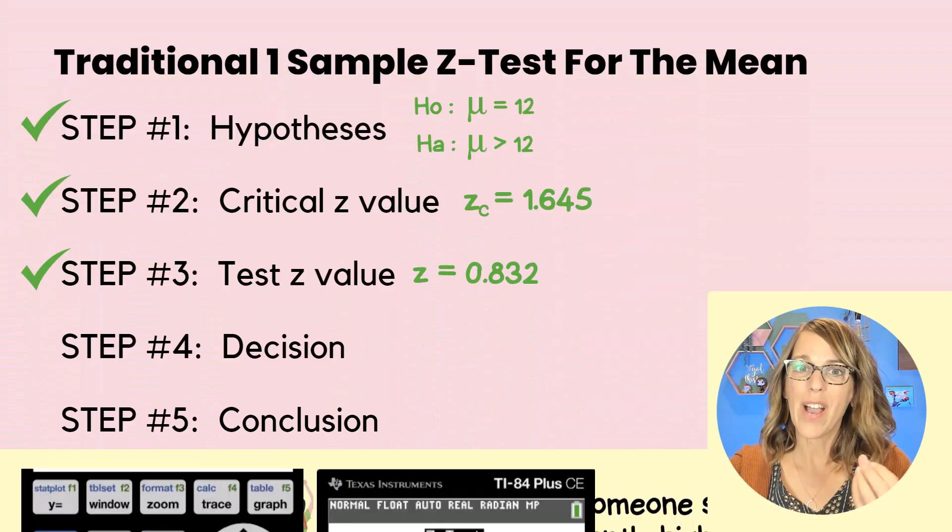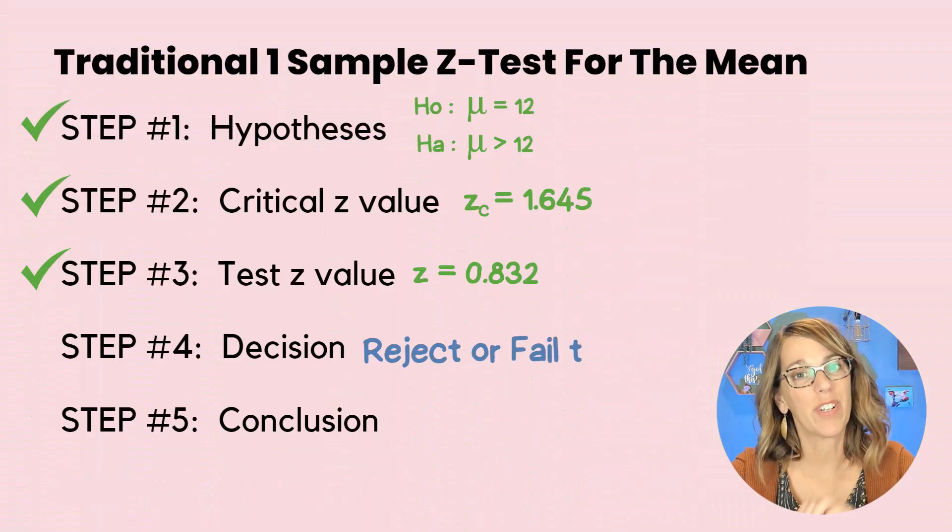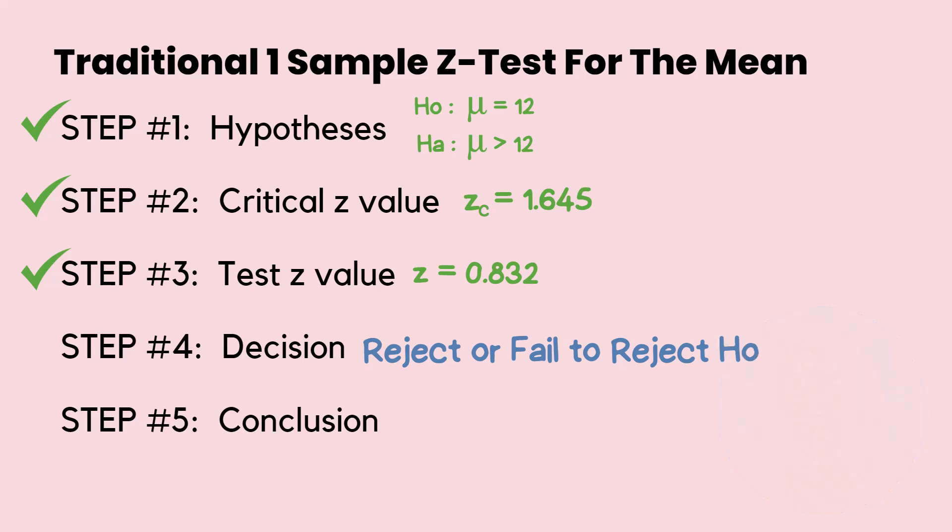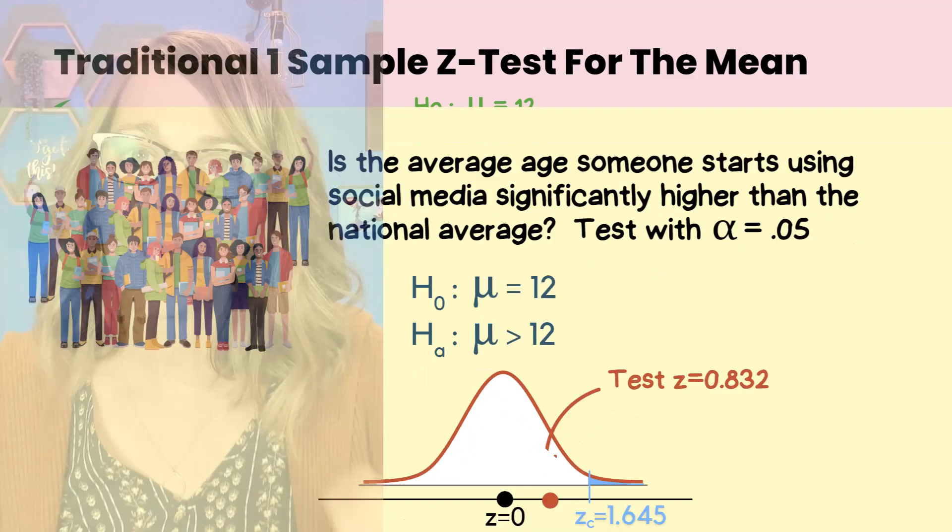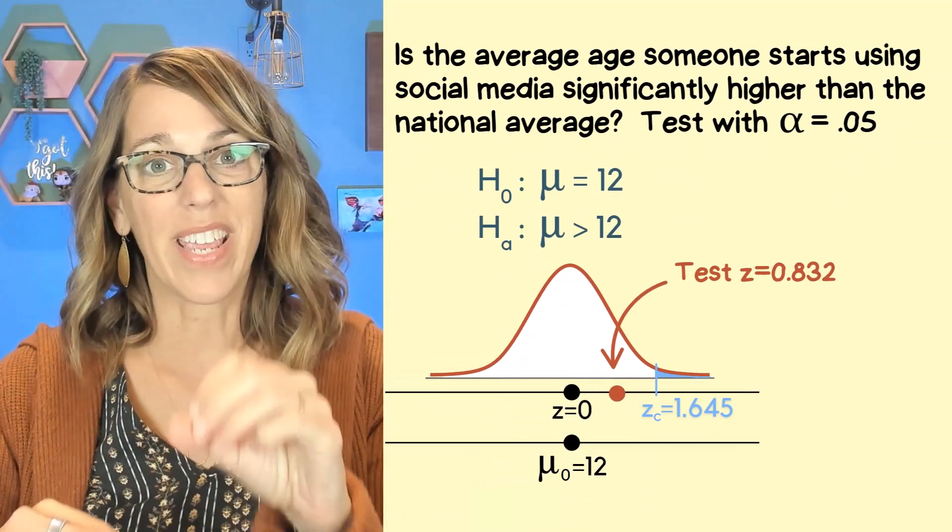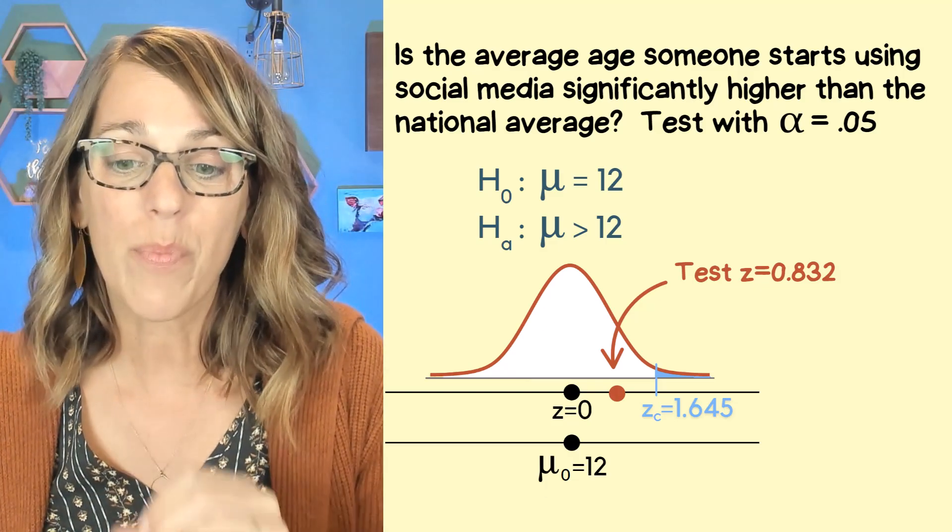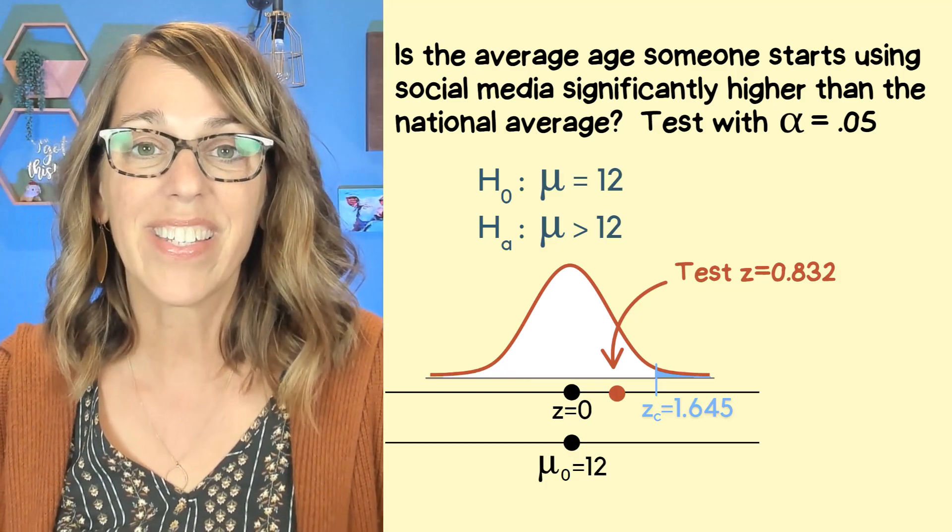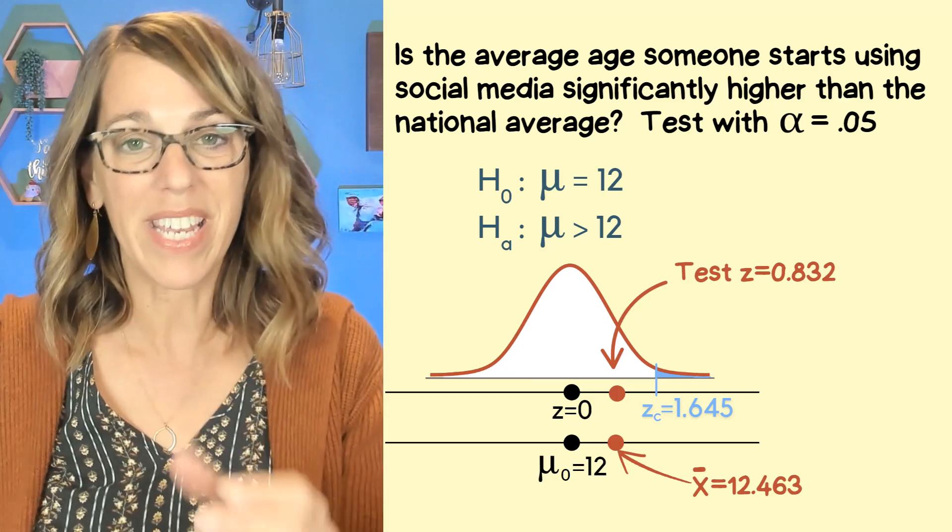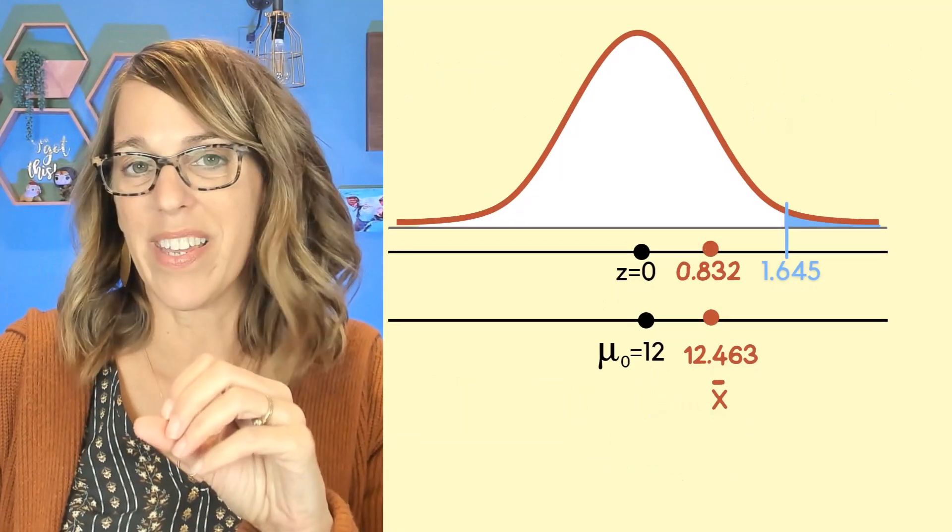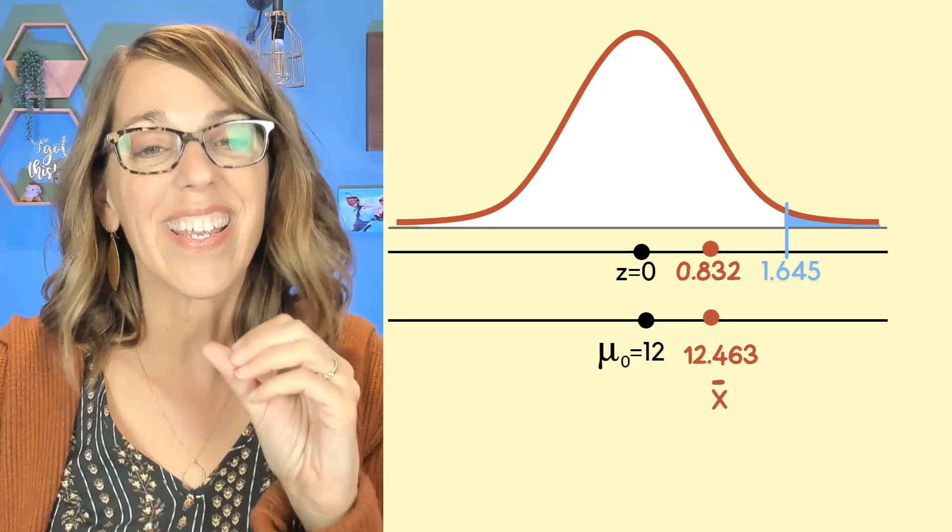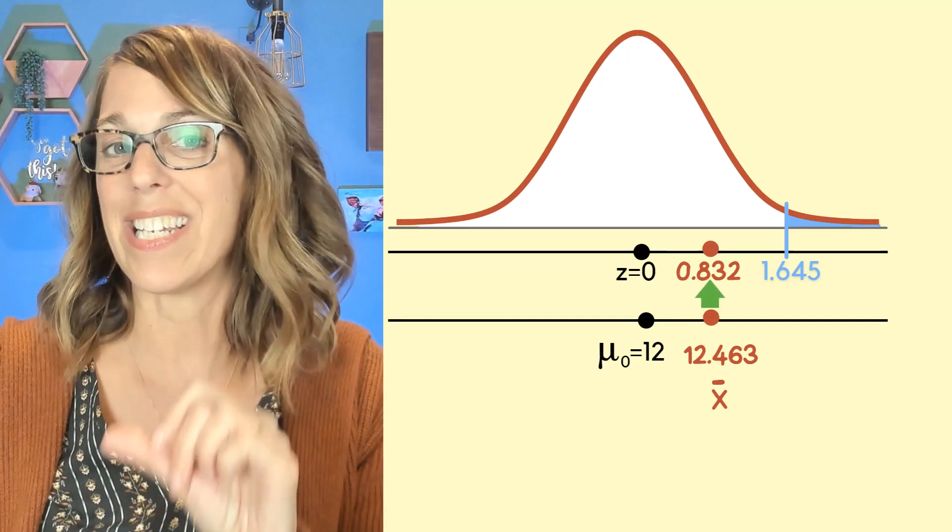We've got our test value, but now we've got to make that decision to either reject or fail to reject that null hypothesis. So what does 0.832 mean? Let's go ahead and put this onto our normal curve. So it lives right here halfway between 0 and that cutoff of 1.645. This lines up with our sample mean. So if I enlarge this a little bit, our sample mean has a Z score of 0.832.